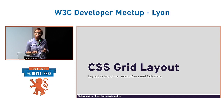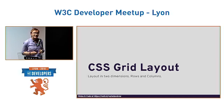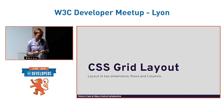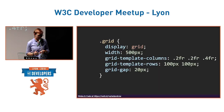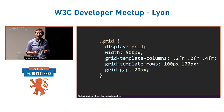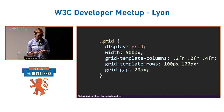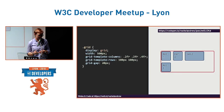Grid was designed for two-dimensional layout — that means laying things out as a row and a column at the same time. Here's a very simple example: I'm creating a grid with three columns and two rows, and my items are going to be placed into the cells created on that grid — and we end up with something like this.